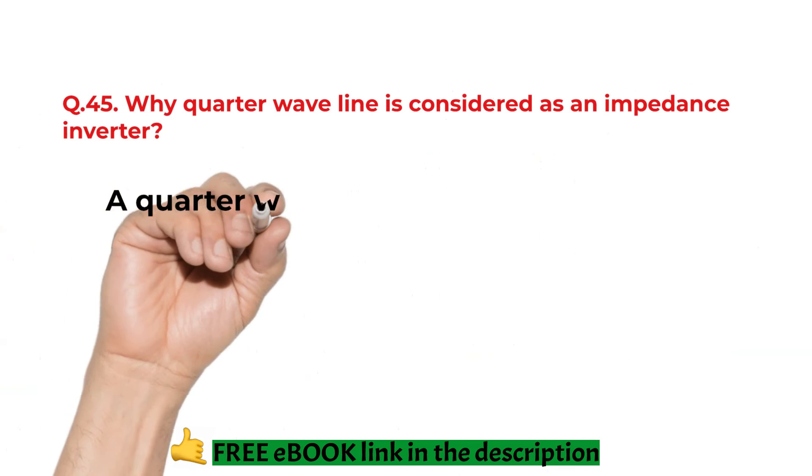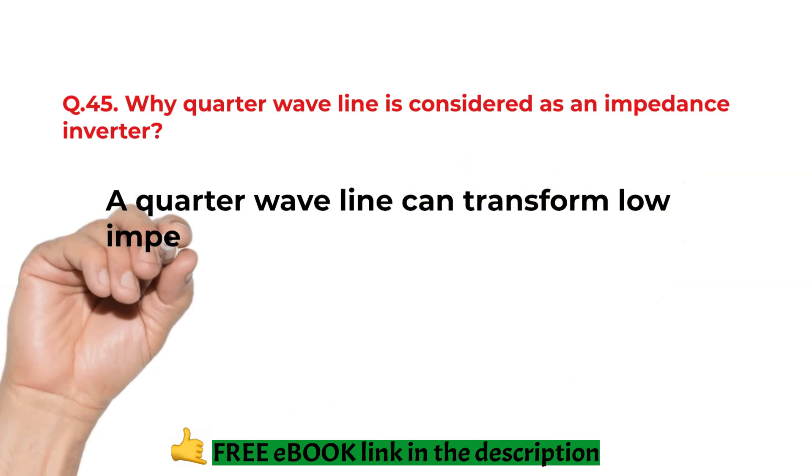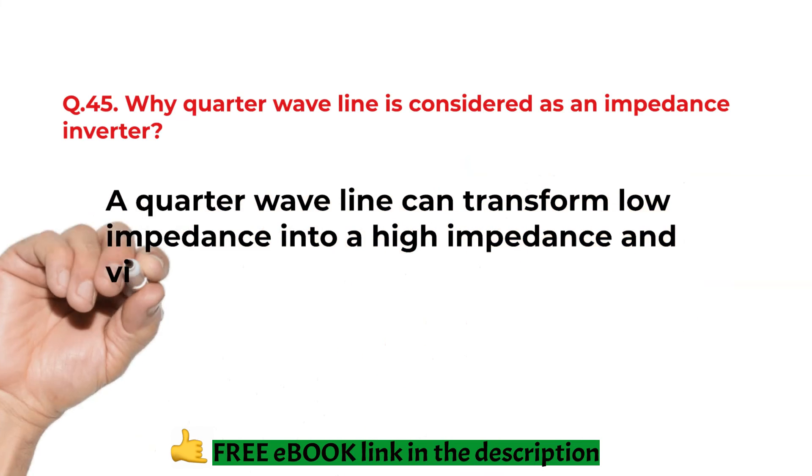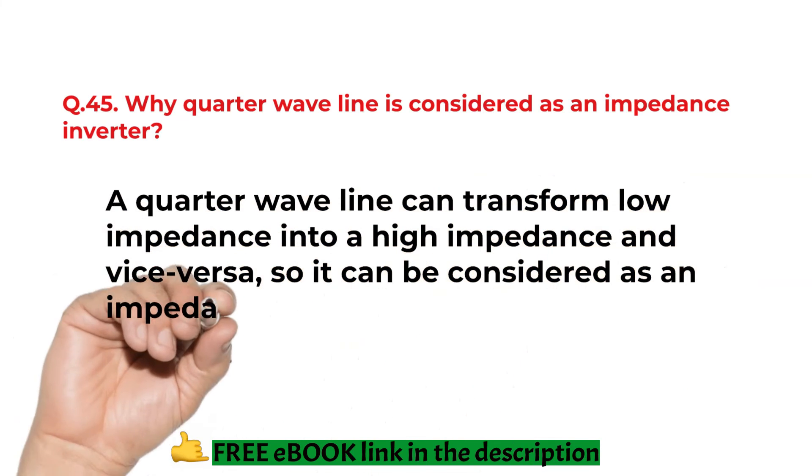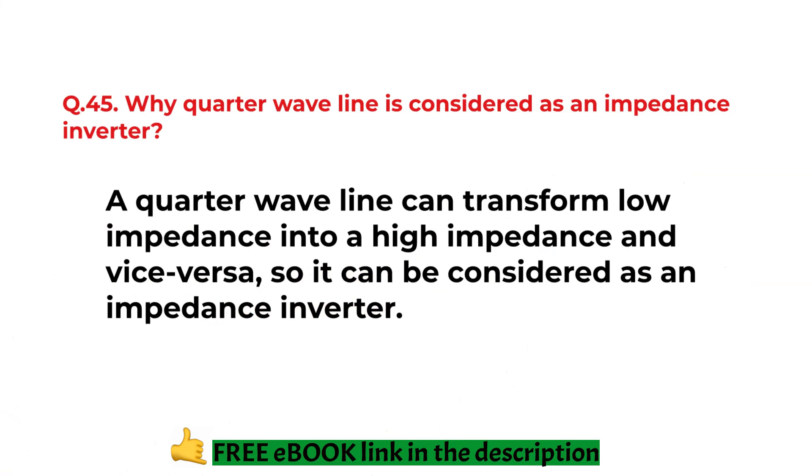Why quarter wave line is considered as an impedance inverter? The quarter wave line can transform low impedance into the high impedance and vice versa. So it can be considered as an impedance converter.